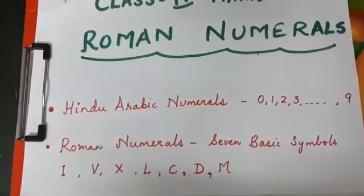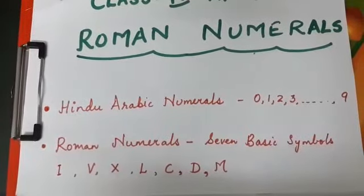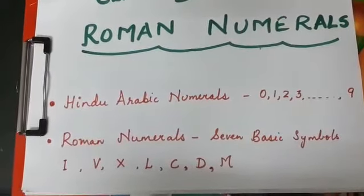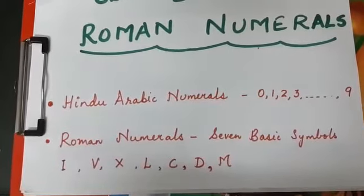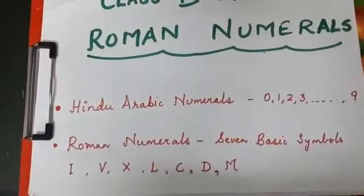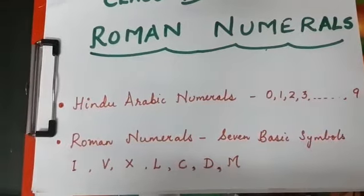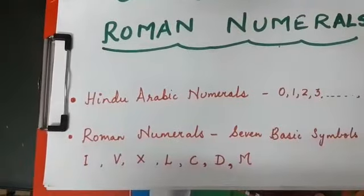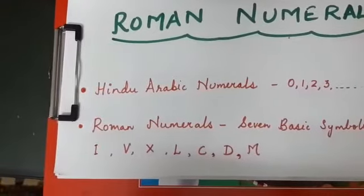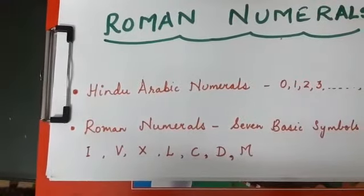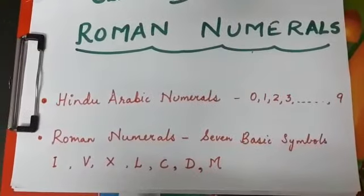Since ancient times, these numbers were used. But have you heard of Romans? Yes, the people who lived in Italy, they are called Romans. But Romans, they had a different system of numbers. They have also been using these numbers since ancient times. Do you know what is ancient? Ancient means since long, long, long years.